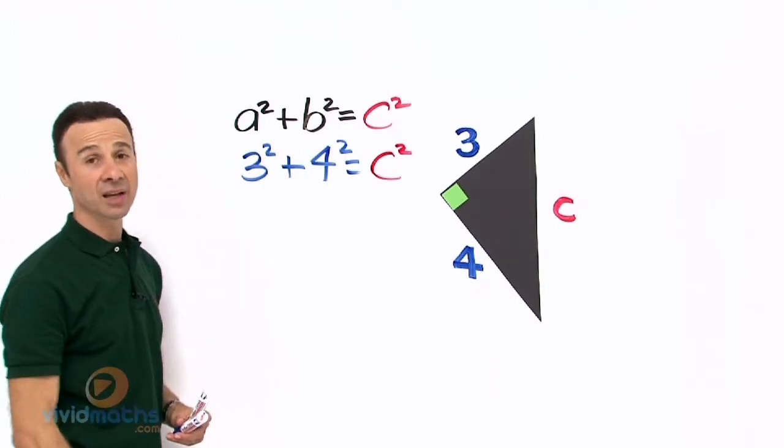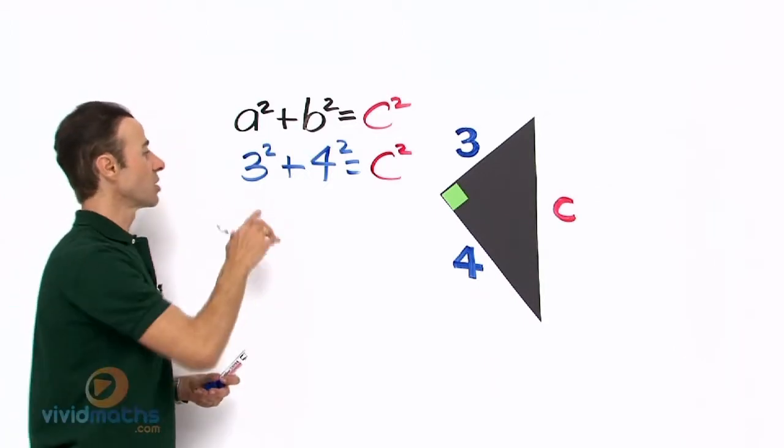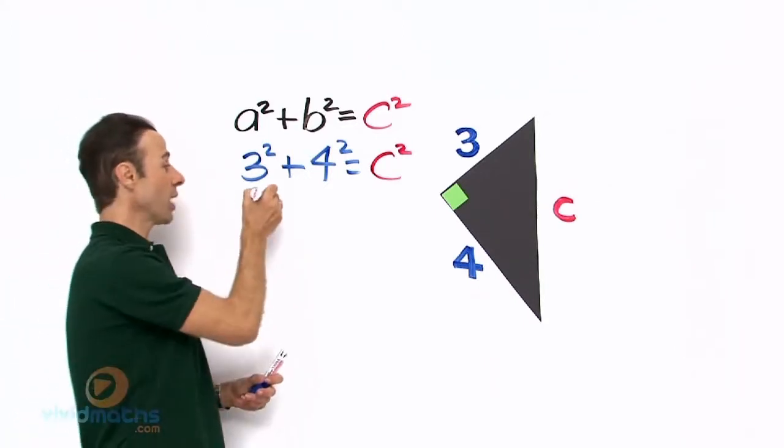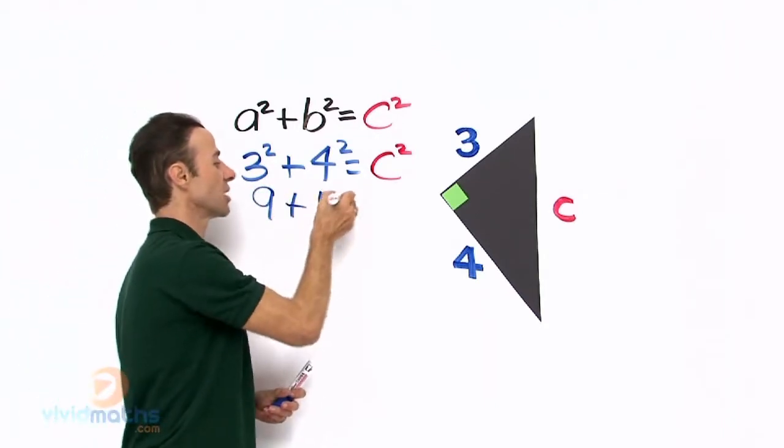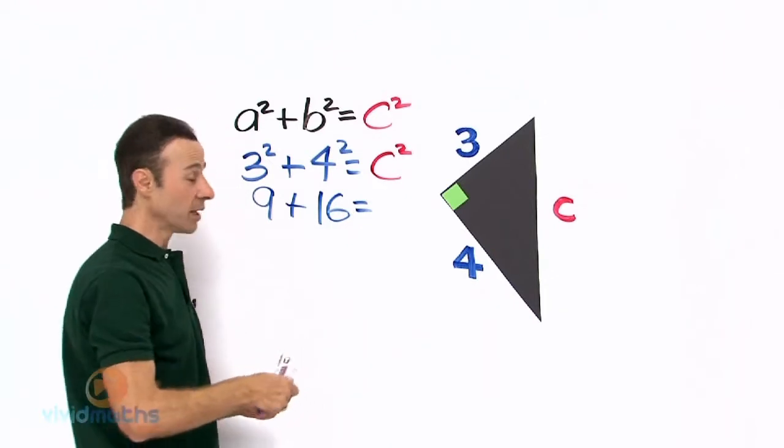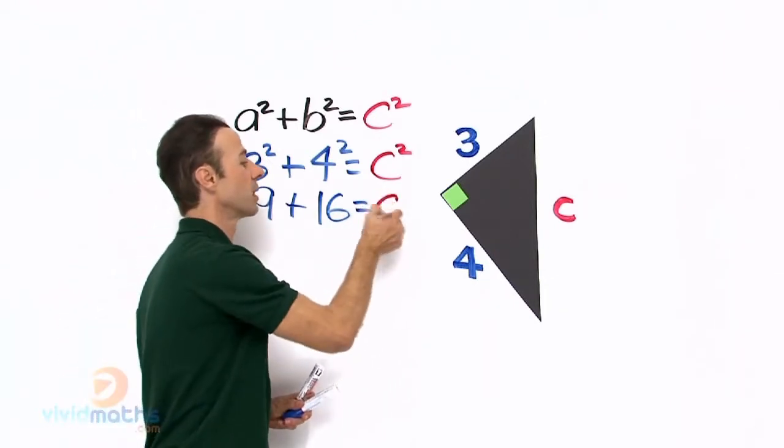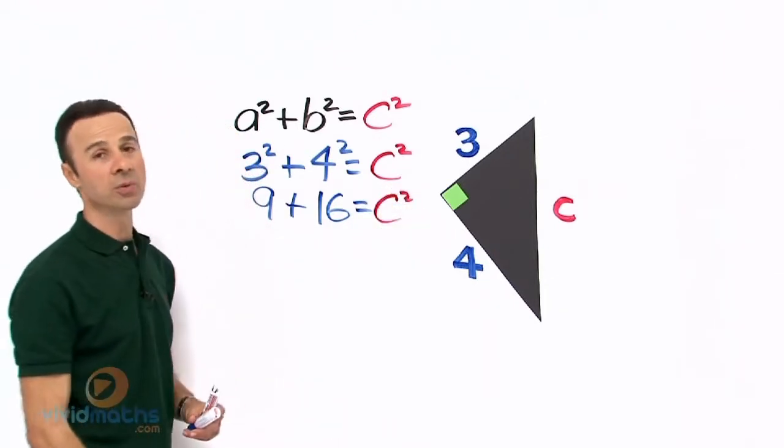Let us expand the threes and the fours. So 3² is going to be 9 plus 4² is 16, and that still equals c², it is still a square pronumeral.